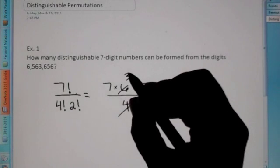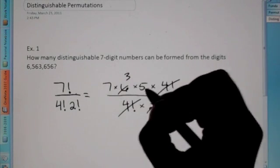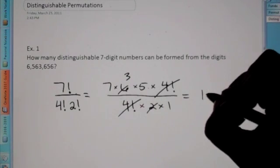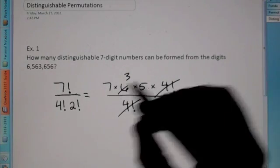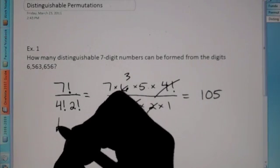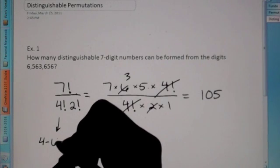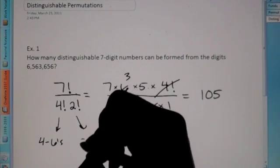So we have 7 × 3, which is twenty-one. Twenty-one times five is one hundred and five. Again, the way we got four is because there were four sixes, and then the two, there were two fives.